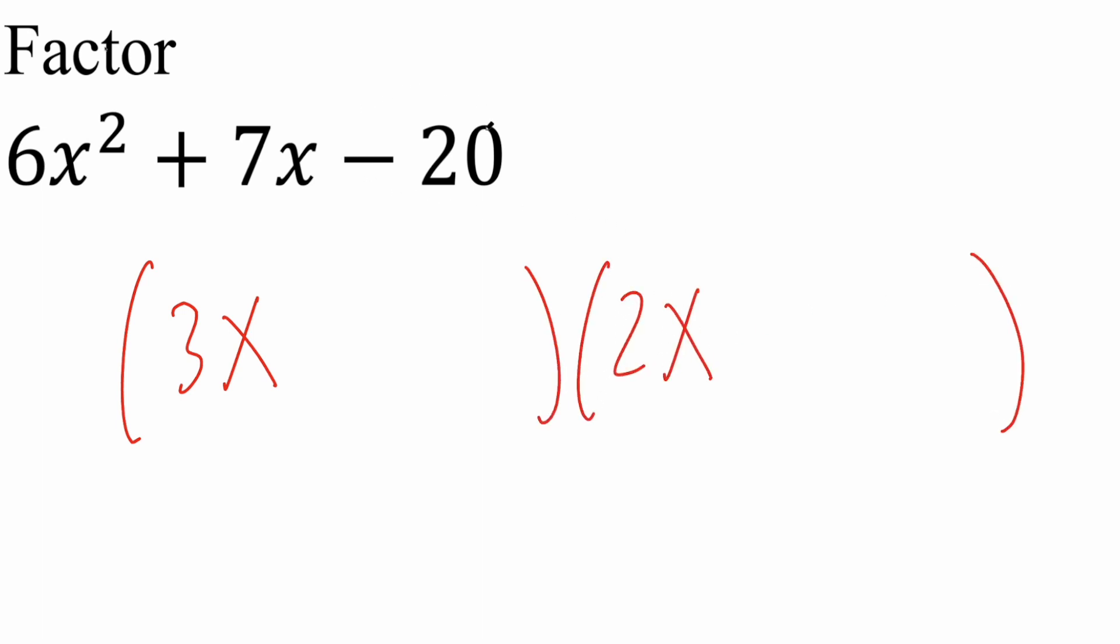Next we need to get negative 20 by multiplication, and there's a few ways to do that. 1 times negative 20 in the reverse, the reverse meaning 20 times negative 1, 2 times negative 10 in the reverse, 4 times negative 5 in the reverse. Now with practice you'll be able to spot it more easily what you should put, but for practice purposes let's just try plus 2 and negative 10.